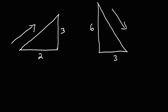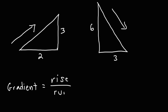The gradient is the same as the slope. The gradient is equal to the rise divided by the run — it's the change in y divided by the change in x.